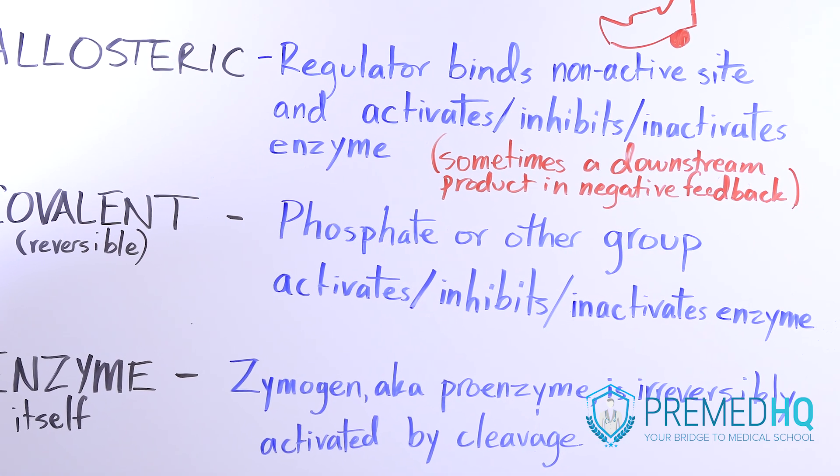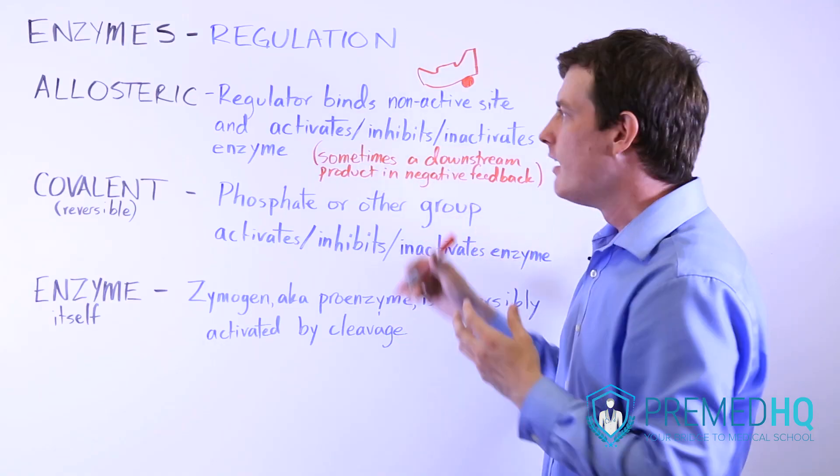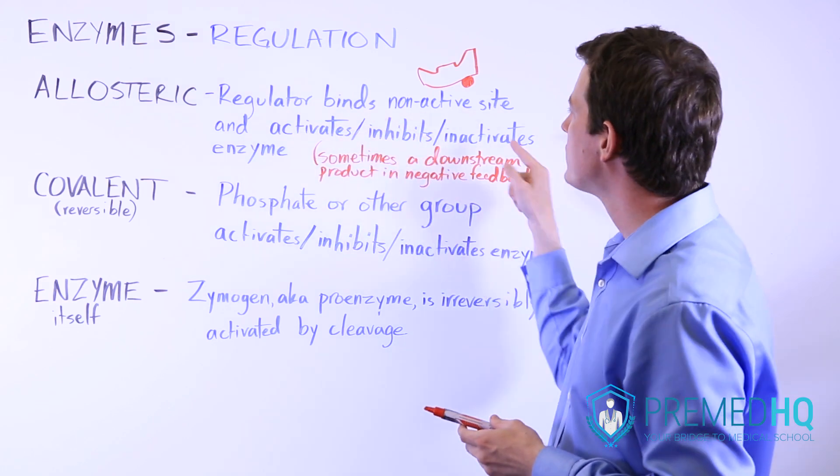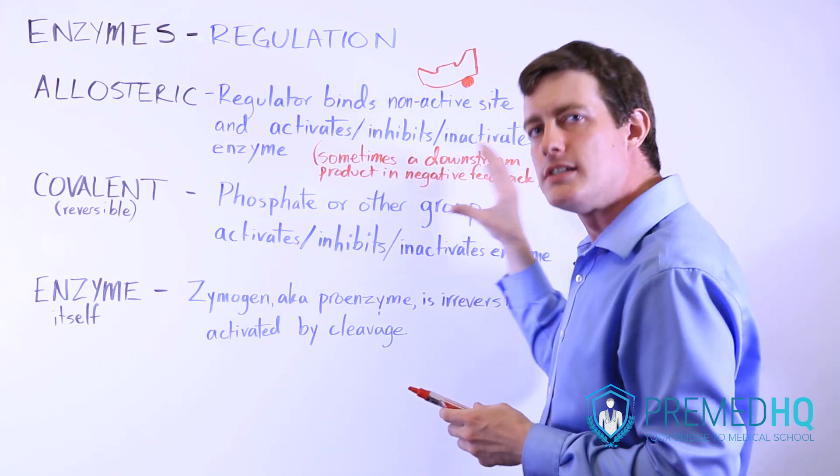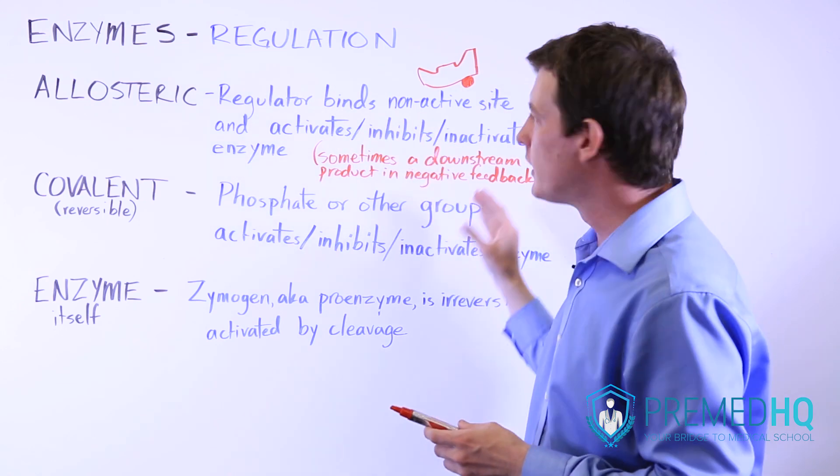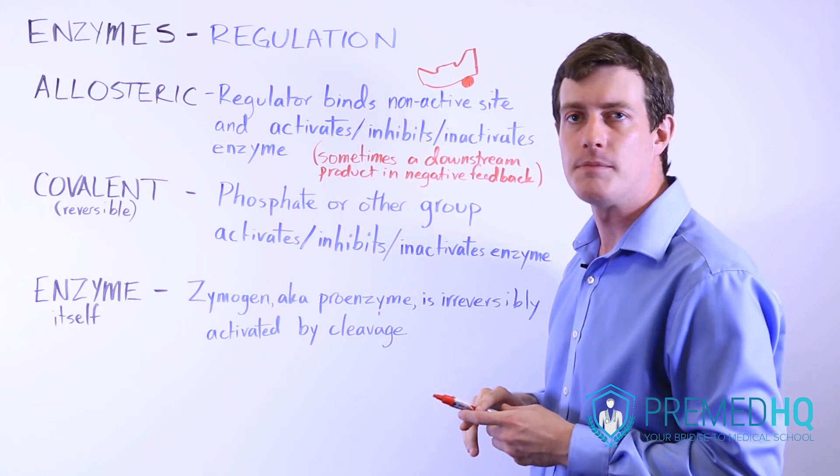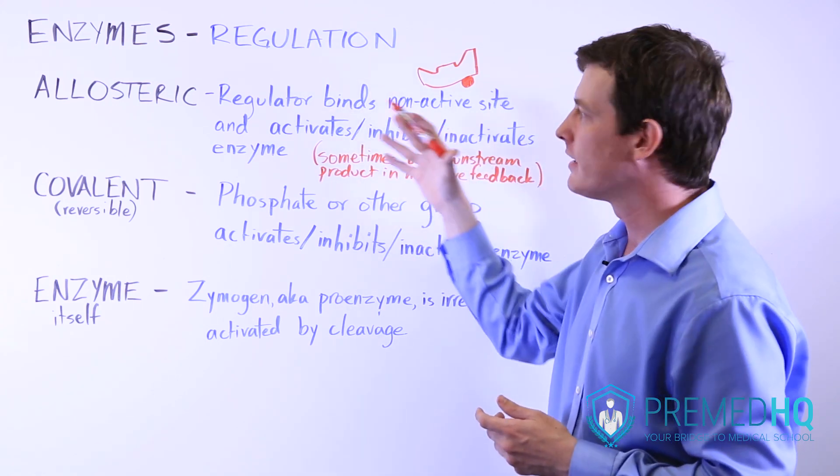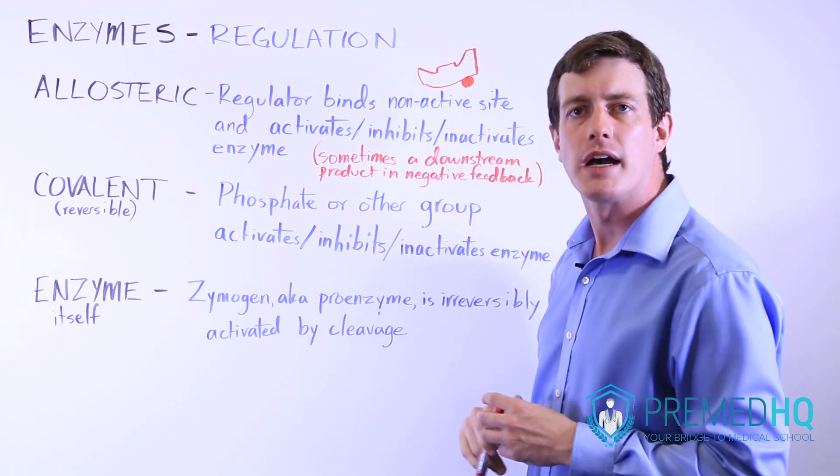Sometimes the allosteric regulator will itself be a downstream product of that enzyme. So essentially by the enzyme producing that product, that product can now come back and say, there's enough of us that you no longer need to function at the same level, and thus they can down-regulate the function of that enzyme. So be aware of downstream products being allosteric regulators in a lot of negative feedback loops.